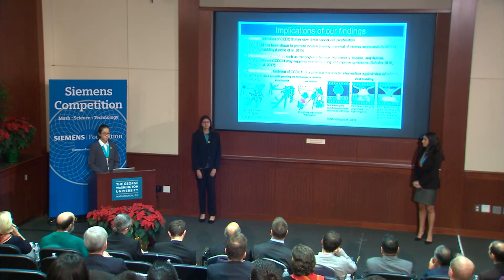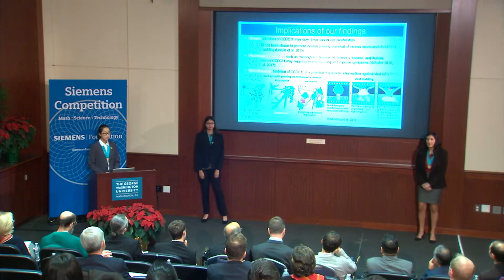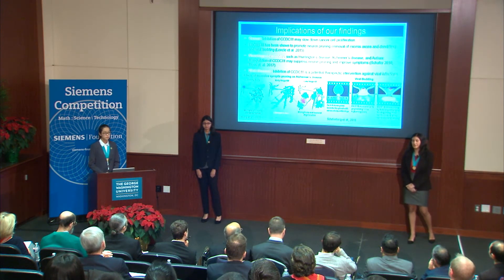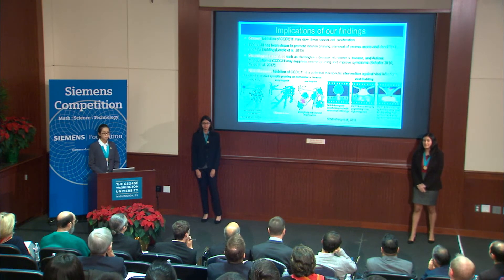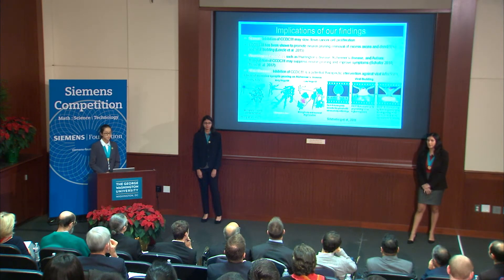Our research has many plausible implications. For example, CCDC11 inhibition may reduce cancer cell proliferation, as cancer is deadly due to excessive cell proliferation and metastasis. Besides cytokinesis, ESCRT-III has also been shown to play roles in neuronal pruning as well as viral budding, since all of these processes are known as membrane scission events. Our results suggest that CCDC11 may also be involved in these other membrane scission events through its recruitment of the ESCRT-III complex.